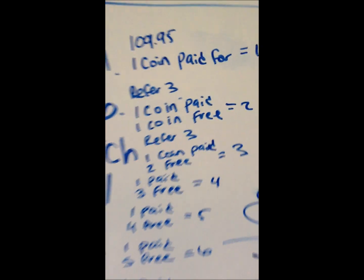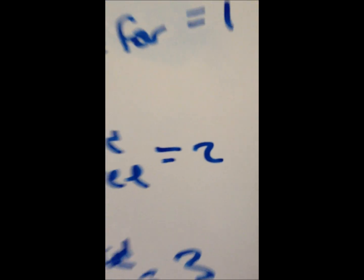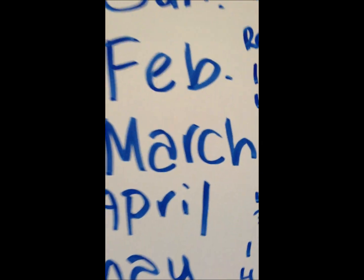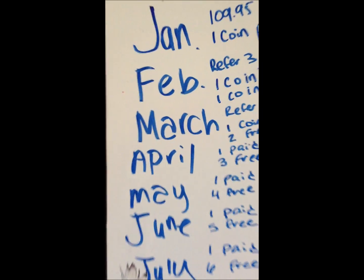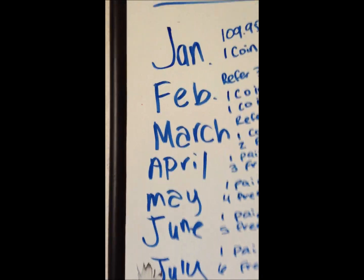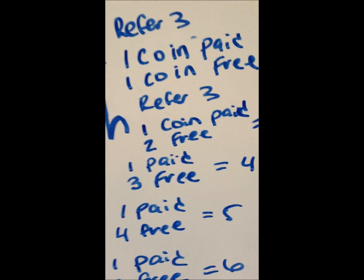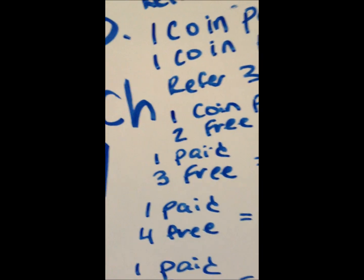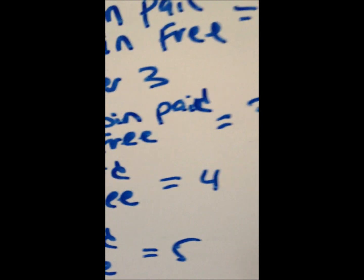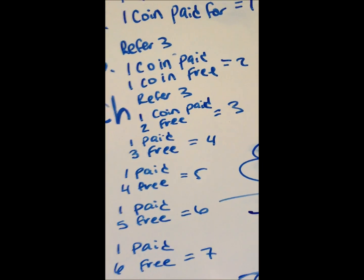Then March comes. Big old March, March 23rd, 1979, was the year that I was born. All right, you see that? You referred three again. You got another, you paid for one coin, $109.95, which comes out to be $117. Now you're getting two coins, you get two more coins.